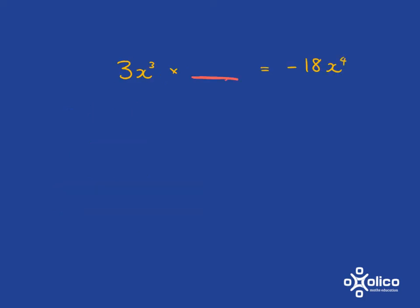And now we're going to get on to what we really want to do, which is what we're going to need when we're doing factorization, which is figuring out that missing piece. So we're asking here 3x cubed times by what is going to get me to negative 18x to the 4? Well, hopefully it's fairly easy for you to see that 3 multiplied by 6 gives you 18. So it's going to be 3 times negative 6, which is going to get you to negative 18.